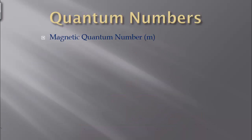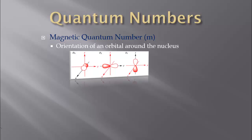The next quantum number is our magnetic quantum number, which is M. This is the orientation of an orbital around the nucleus. Looking at the P sublevel, we have three different orbitals that the P electron can be in — it can be in the X, Y, or Z plane. The magnetic quantum number tells us which orbital it's actually in: Px, Py, or Pz. Of course, it gets a little different once you get into the D and the F, but it tells you which of those specific orbitals — which of the 5 D or which of the 7 F orbitals — we are looking at.